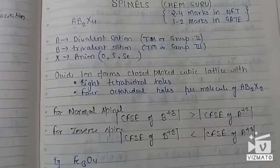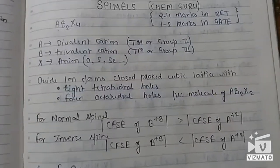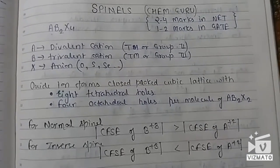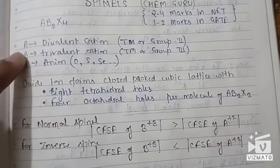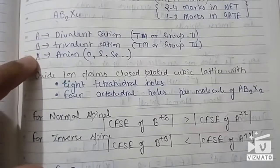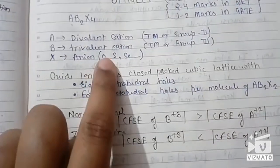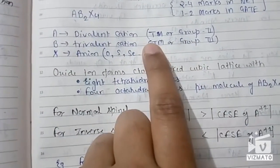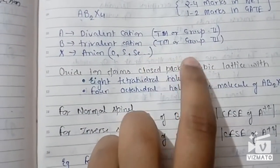Be sure to practice as many questions as you can from the previous year papers. The general formula for spinels is AB₂X₄, where A is a divalent cation, B is a trivalent cation, and X could be any anion in the form of O, sulfur, or selenium. A could be a transition metal or a Group 2 metal, and B could be a transition metal or a Group 3 metal.